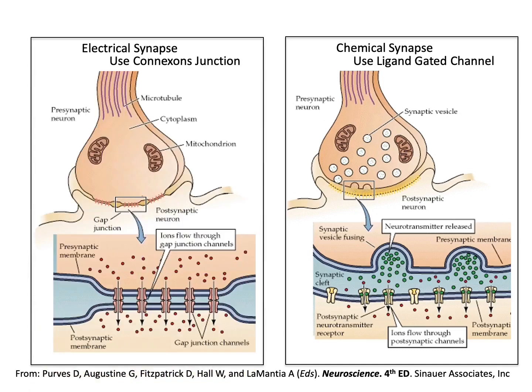As we start using these synapses more often, we get greater connexon development and alignment of the connexons between the synapses. As these synapses get used more often, we can go from chemical transmission to ion transmission — where ions flow from the presynaptic membrane into the postsynaptic membrane, causing the direct transference of the action potential from cell A to cell B.